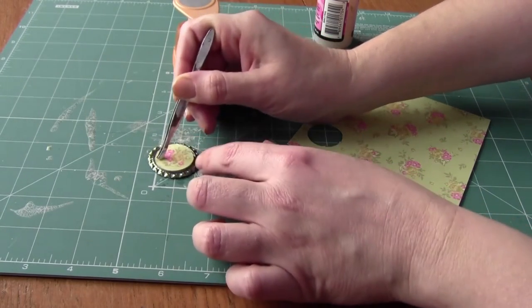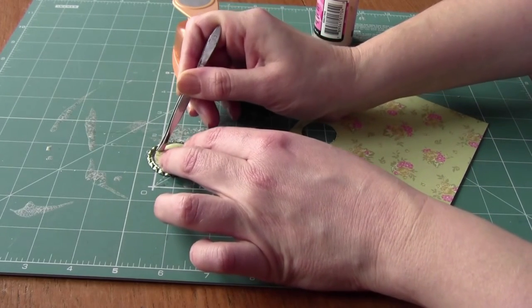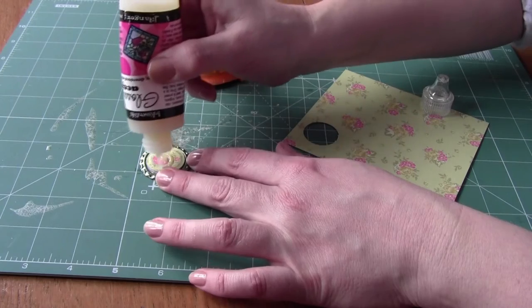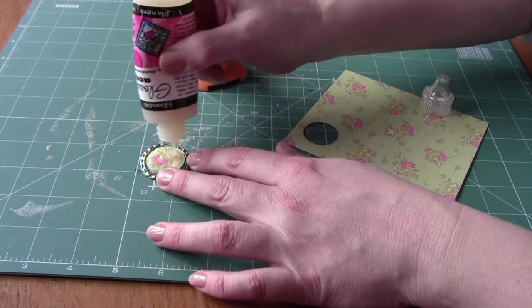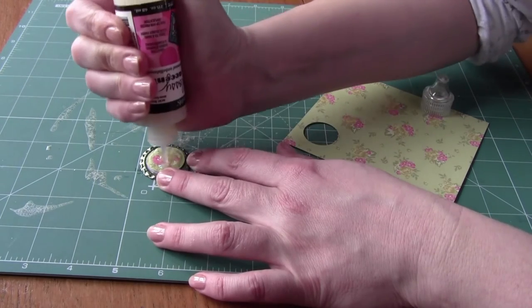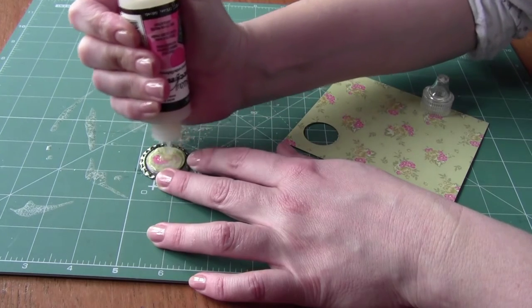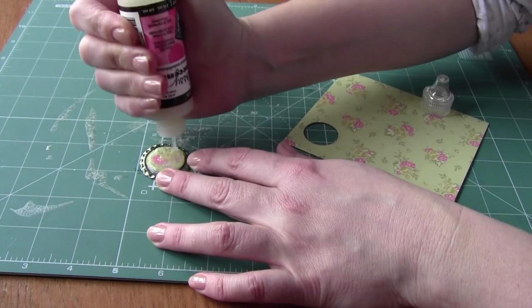If it starts to come up over the edges of the paper don't worry, we're going to cover the circle with the glossy accents in a minute anyway. Let your glossy accents dry for about 10 minutes and then once you know the paper is securely stuck to the bottle cap, you want to cover the whole image with another good coating of glossy accents.